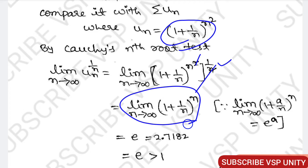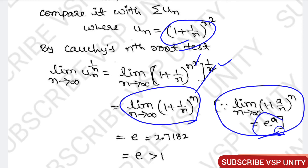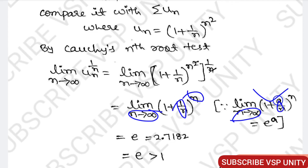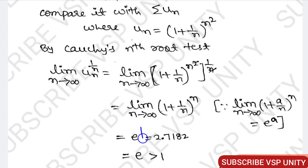We have the formula: limit as n tends to infinity of (1 + a/n) to the power of n equals e^a — whatever value is in the numerator becomes the power of e. This is a well-known formula. Here, since the value is 1, e to the power of 1 will come. e to the power of 1 is nothing but e.